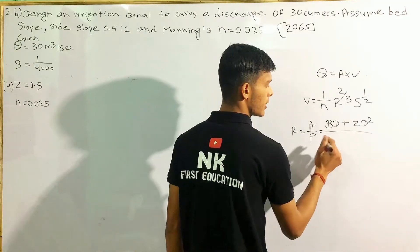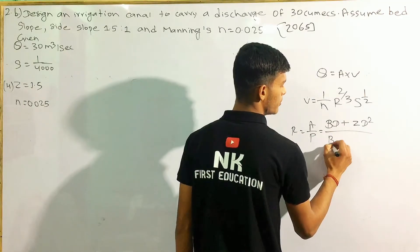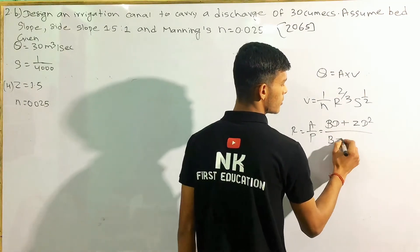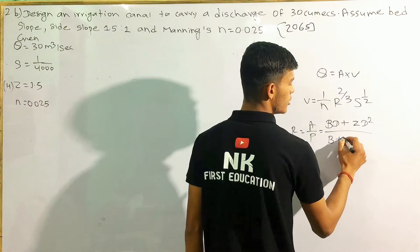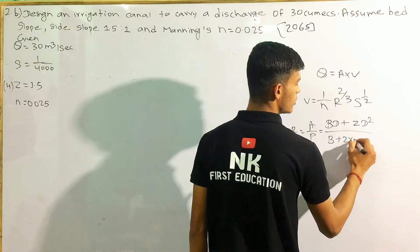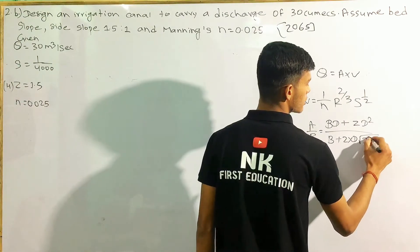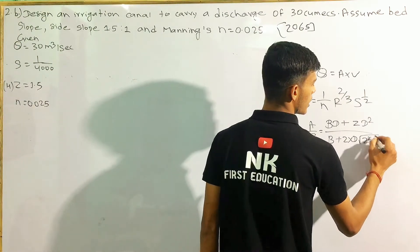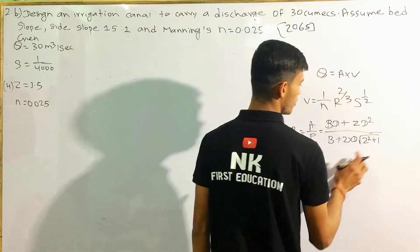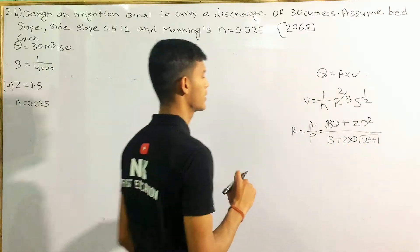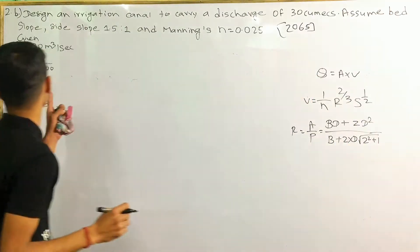The perimeter formula is: P = B (bare width) plus 2D times √(Z² + 1).